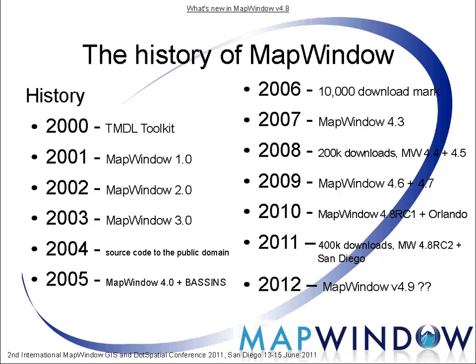In 2010, the first international MapWindow GIS conference is held in Orlando, Florida. The first release candidate of 4.8 is ready. During the summer, several students work on MapWindow for the Google Summer of Code and the MapWindow Summer of Code. Especially the work of Sergei is great — his improvements made the ActiveX better, faster and more appealing. In 2011, the 400,000 download mark is reached. Dan and Paul are giving presentations and workshops during the Open Water Symposium in Delft, the Netherlands. The second MapWindow GIS conference, now called the International MapWindow GIS and .spatial conference, is held in June in San Diego, California. The stable version of 4.8 will be ready after summer and work will start on version 4.9.